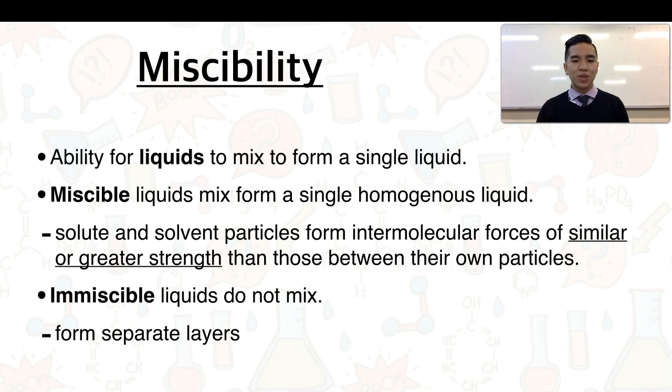If we do have a miscible liquid, it forms a single homogenous liquid. That means it will form a single layer. There won't be any discernible differences between them. Whereas an immiscible liquid would not mix with one another.